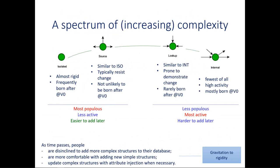And this brings us to the fundamental contribution of the paper, which is if you put all this together, you have a spectrum of increasing complexity. So there is a correlation between the topology of tables and how active they are in terms of their evolution. So on the left-hand side of the spectrum, you have isolated tables. They are almost rigid with zero changes. And they are frequently born after the originating version. And similar to them are the source tables. They're a little bit more active. But overall, these two categories, they constitute the mega category of most populous, less active and easier to add tables.